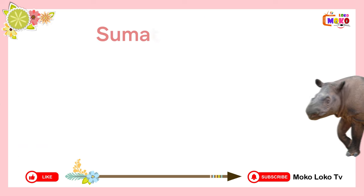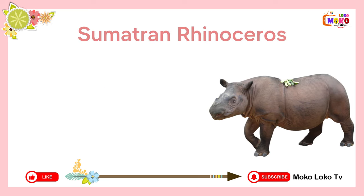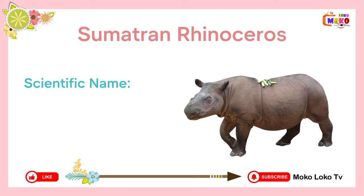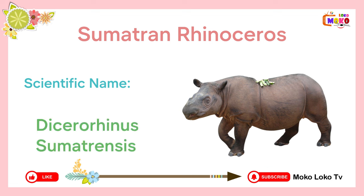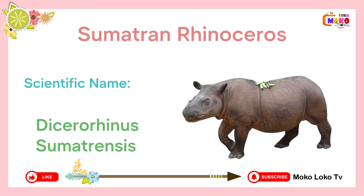Sumatran rhinoceros. Scientific name: Dysaurorinus sumatrinsis.